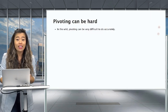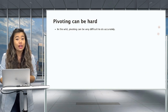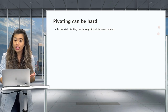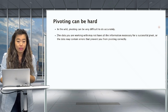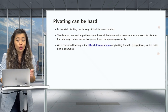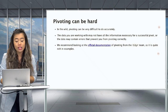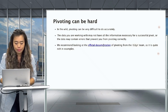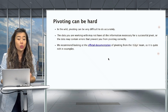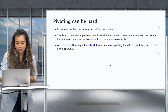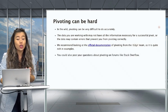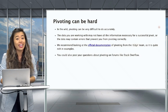During this session, we've mainly covered simple examples of pivoting. However, in the real world, it may not be so straightforward, because real world data can often have missing information or errors that prevent you from accurately pivoting your data set. In those instances, we recommend looking at the official documentation prepared by the tidyR team, linked here, as it's quite rich in examples. Alternatively, you could also post your questions about pivoting on forums like Stack Overflow.